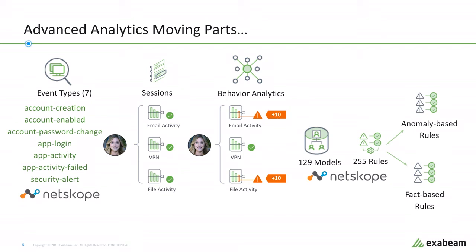This is where Exabeam begins to stitch Netscope data into Exabeam smart timelines. Behavioral analytics tied to the event types that Netscope maps to include 129 models and 255 either anomaly-based or fact-based rules.